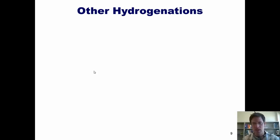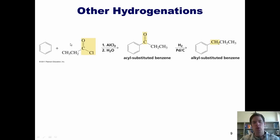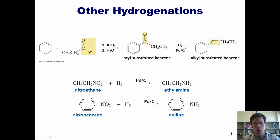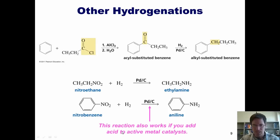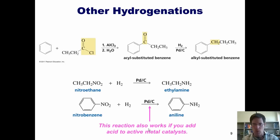There are lots of other reactions involving hydrogen and a palladium or platinum catalyst. One practical way of getting a straight-chain alkylated benzene is to take benzene, treat it with Friedel-Crafts acylation to put an acyl group on the benzene, then hydrogenate, reducing that carbonyl all the way to an alkane—giving a straight-chain alkylated benzene. I can also take a nitro compound, treat it with hydrogen gas and platinum on carbon, and reduce it to an amine. Similarly, that works for nitrobenzene. This reaction also works if you add acid to active metal catalysts instead of just using palladium on carbon.